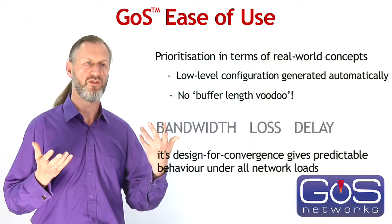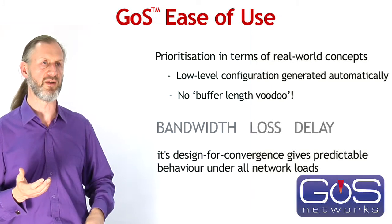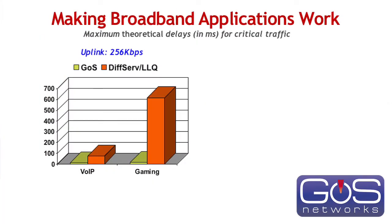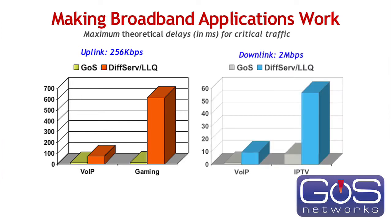GOSS is designed for convergence and gives predictable behavior under all network loads for each class of traffic simultaneously. Here's an example looking at a worst-case theoretical behavior analysis for GOSS versus a more standard QoS mechanism on a broadband link. The bandwidth is asymmetrical — the uplink is only 256 kilobits, which is pretty common. On the uplink we're looking at worst-case delay for two classes of traffic: one for voice and one for another application such as gaming. On the downlink, typically much faster at two megabits, we have voice traffic and another application such as IPTV. The delays on the downlink are at a lower scale simply because each individual packet can be sent in less time. The key point is that in a typical broadband scenario, there are multiple applications that require low delay.